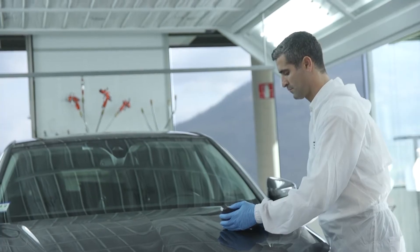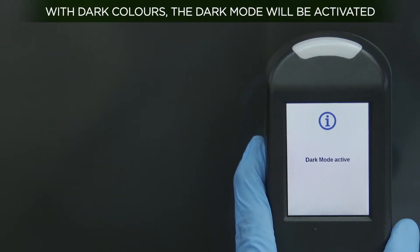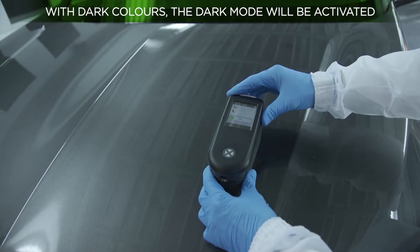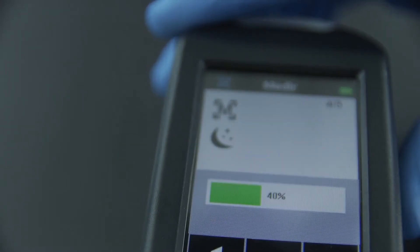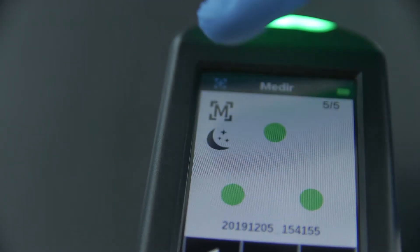Sometimes the dark mode may get activated when measuring dark colors. This is to extend the reading time and luminosity when making the reading, as light reflection is more complicated with dark colors.